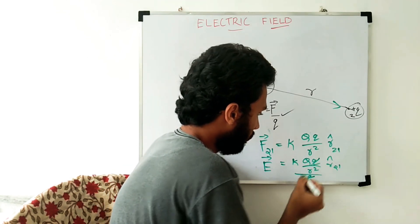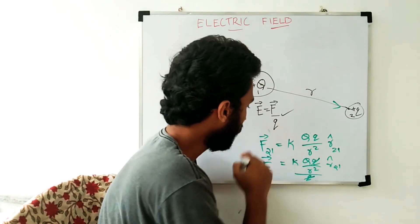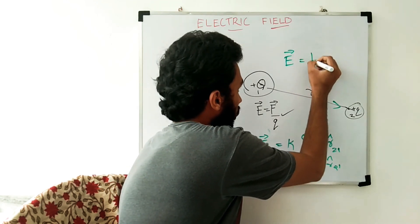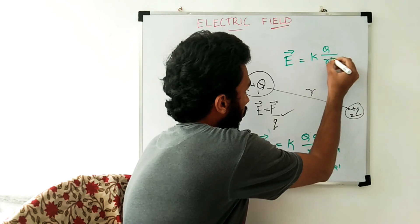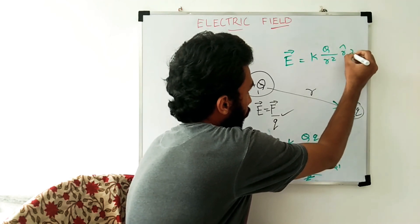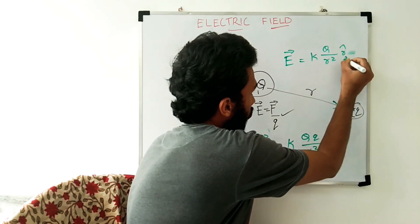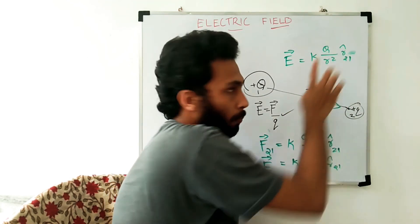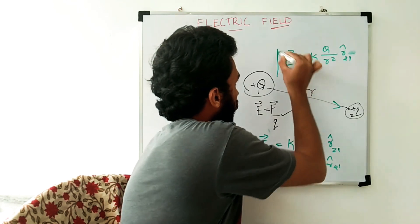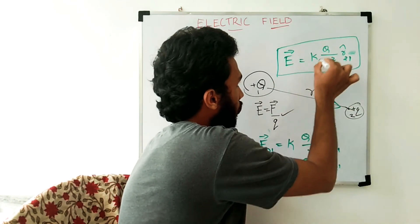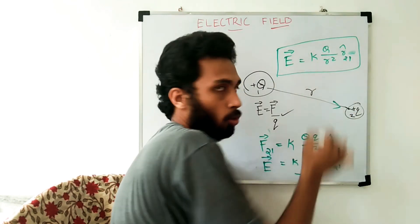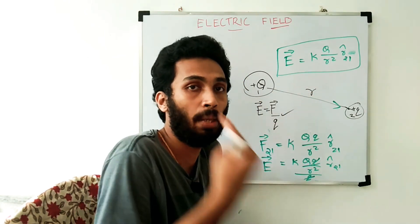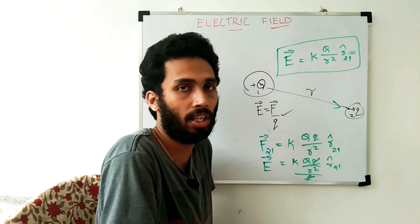Electric field E-vector equals F-vector divided by q. It is KQq divided by R-squared times R-cap, divided by q. The q cancels out. So E-vector equals KQ by R-squared times R-cap to 1. This is the final equation: E-vector equals KQ by R-squared times R-cap.